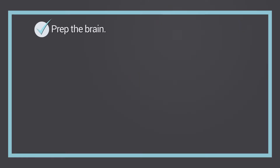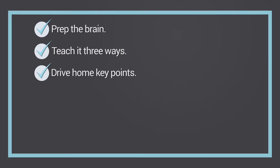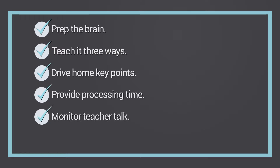Turn the Light on is a routine that helps teachers make new learning comprehensible and helps students process information in new ways. During the Turn the Light on routine, we regularly prep the brain, teach it three ways, drive home key points, provide processing time, monitor teacher talk, and scaffold to ensure mastery.